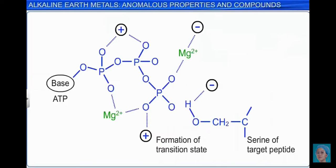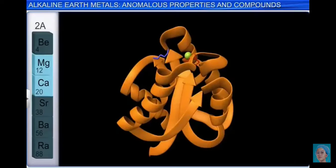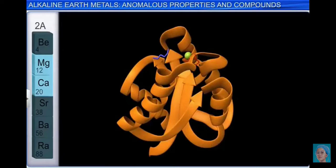Phosphoryl transfer enzymes, which use ATP in phosphate transfer, use a magnesium ion as a cofactor for enzyme function. An illustration of one such enzyme is shown here, with the magnesium ion shown in green.